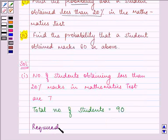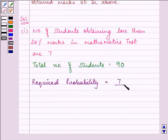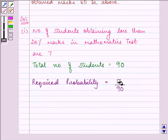So the required probability is 7 students out of 90 obtaining less than 20% marks in mathematics. This is the answer to the first part.